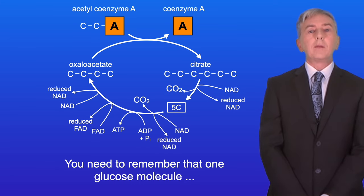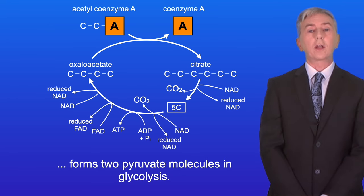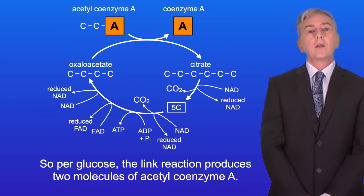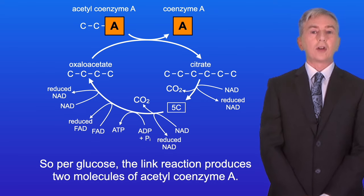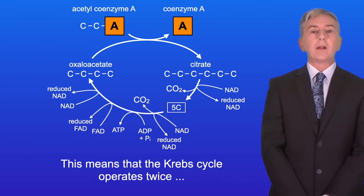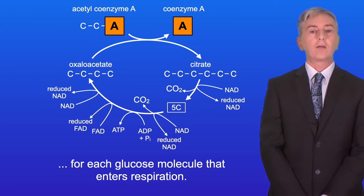Now you need to remember that one glucose molecule forms two pyruvate molecules in glycolysis. So per glucose the link reaction produces two molecules of acetyl coenzyme A. This means that the Krebs cycle operates twice for each glucose molecule that enters respiration.